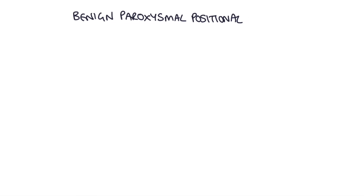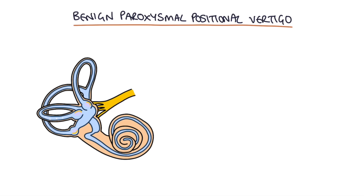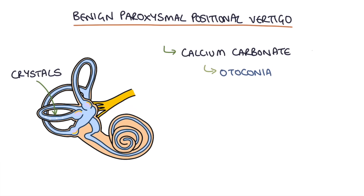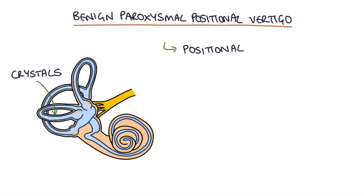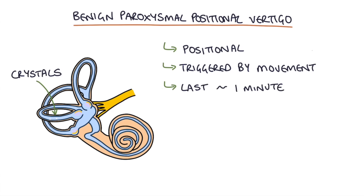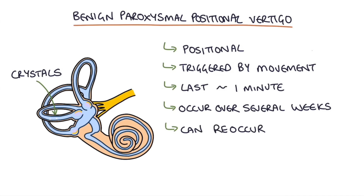Benign paroxysmal positional vertigo, or BPPV, is caused by crystals of calcium carbonate called otoconia that become displaced into the semicircular canals. They may be displaced by a viral infection, head trauma, aging, or without any clear cause. These crystals disrupt the normal flow through the canals. Symptoms are usually positional because movement is required to confuse the system, and when the patient is completely still there is no disruption to fluid movement and they are symptom free. Attacks of vertigo are triggered by movement and can last around a minute. Symptoms often occur over several weeks then resolve, but can reoccur weeks or months later. A special test called the Hallpike manoeuvre can be used to diagnose BPPV.